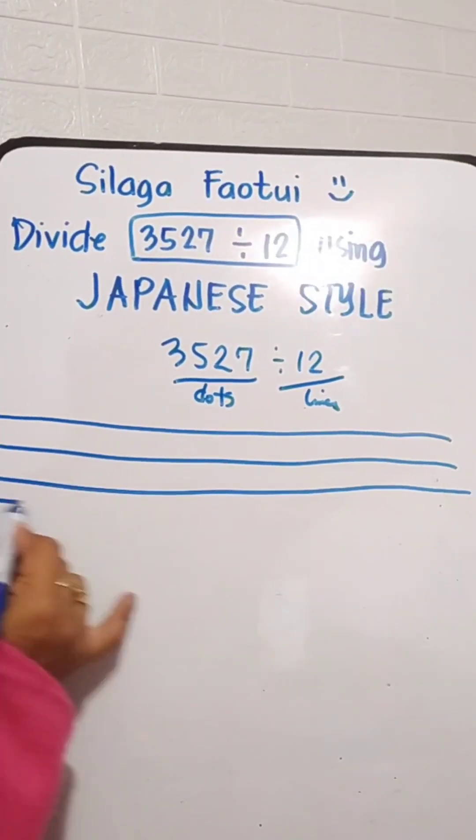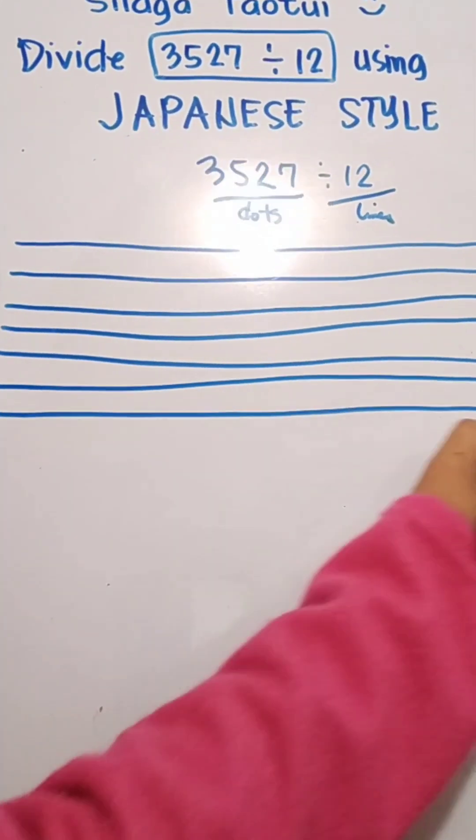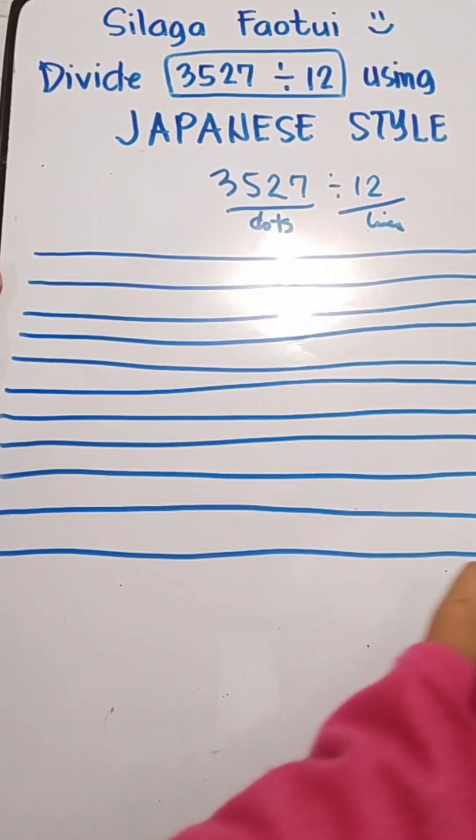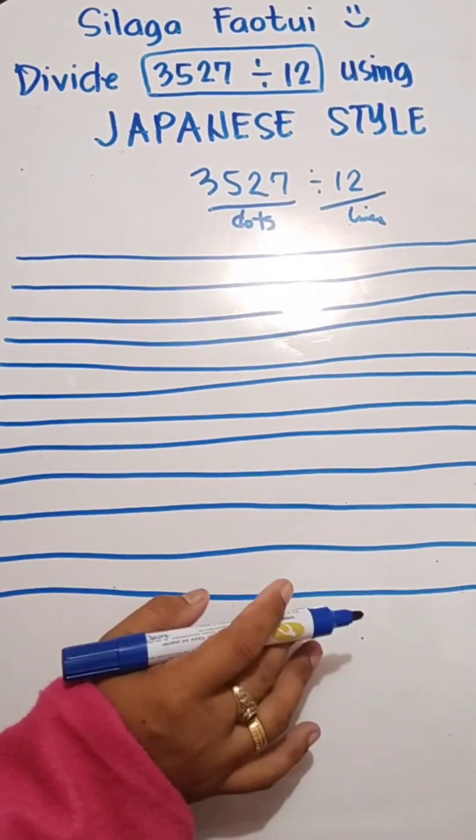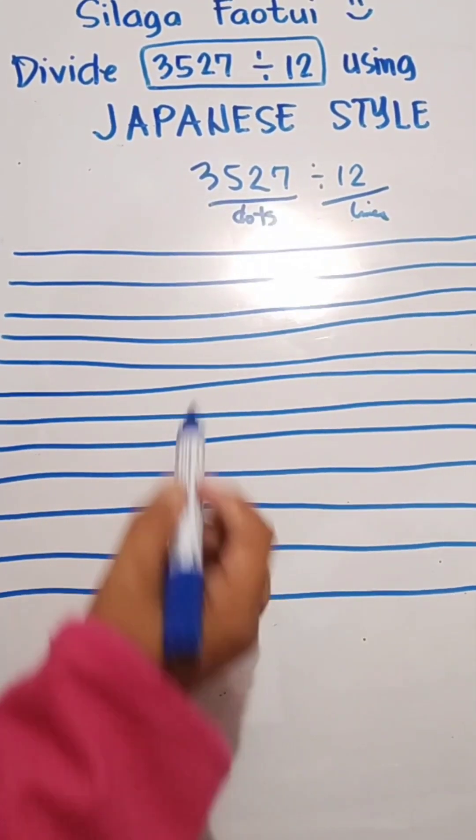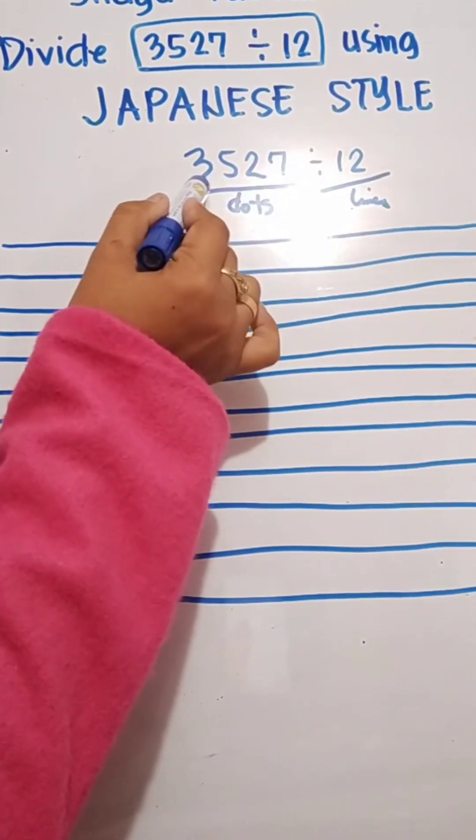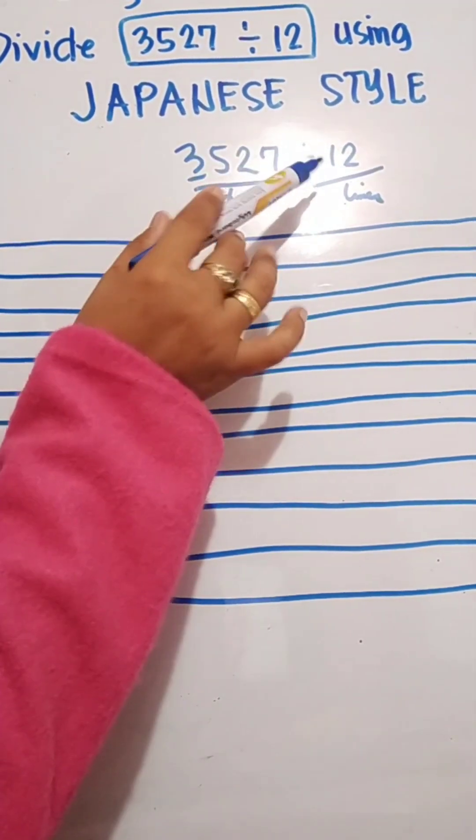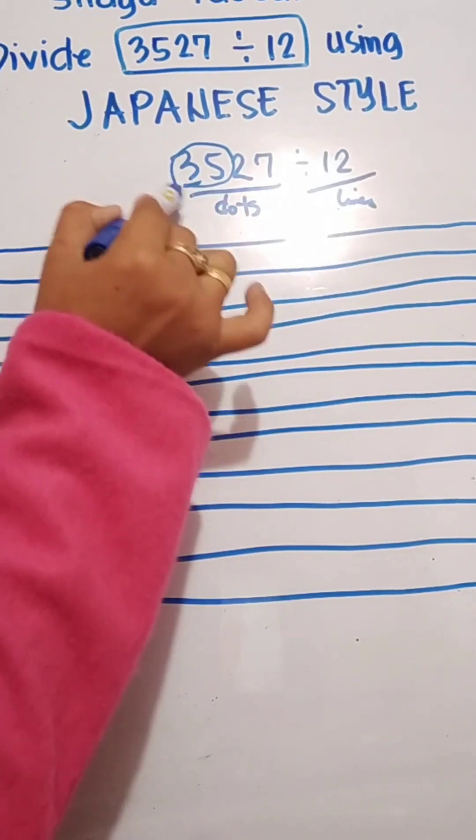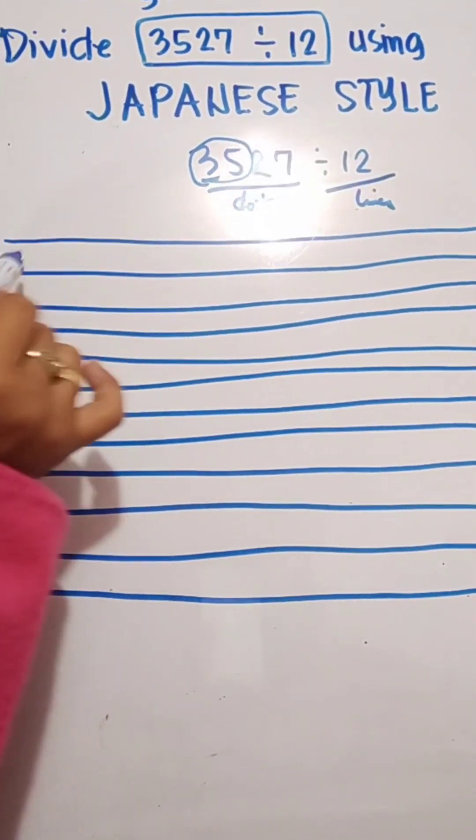1, 2, 3, 4, 5, 6, 7, 8, 9, 10, 11, 12. I'm sorry if it's not really a straight line, but this is just a representation. So we are going to use this first digit. 3 divided by 12, could it be? So we will use this 35. So we will draw 35 dots.